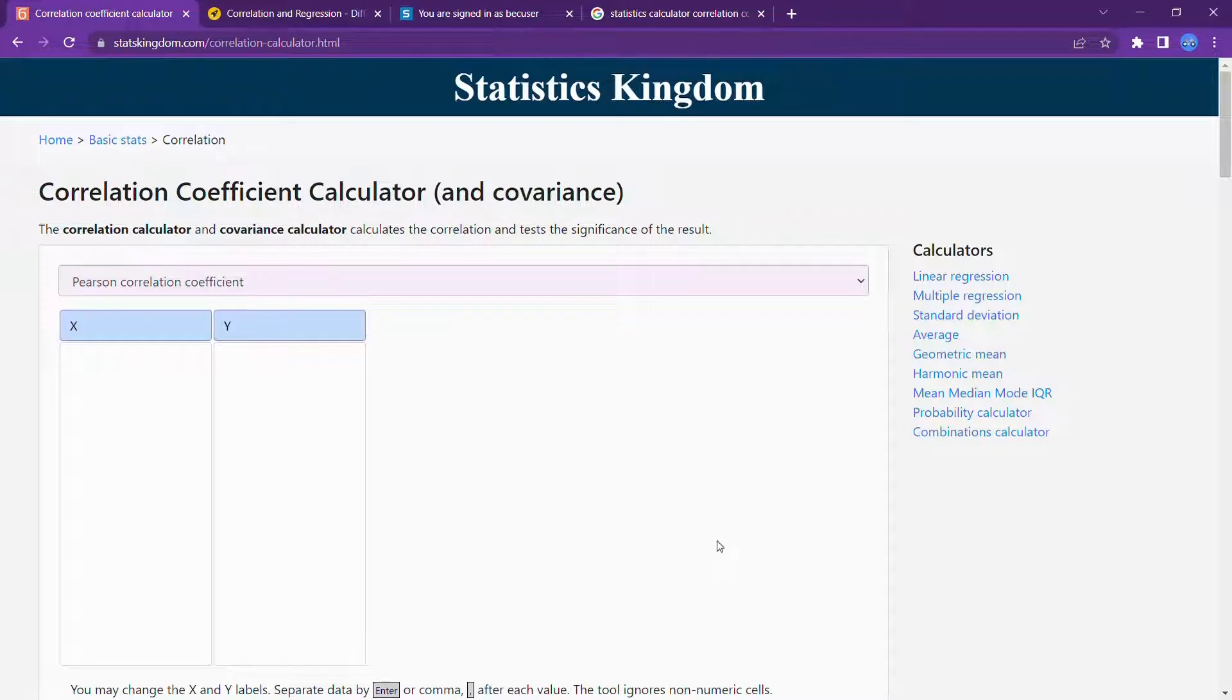We have discussed what is correlation and coefficient of correlation. Let's move on to solving a problem related to coefficient of correlation. Here, I am using an online website called Statistics Kingdom which is used to calculate the coefficient of correlation.